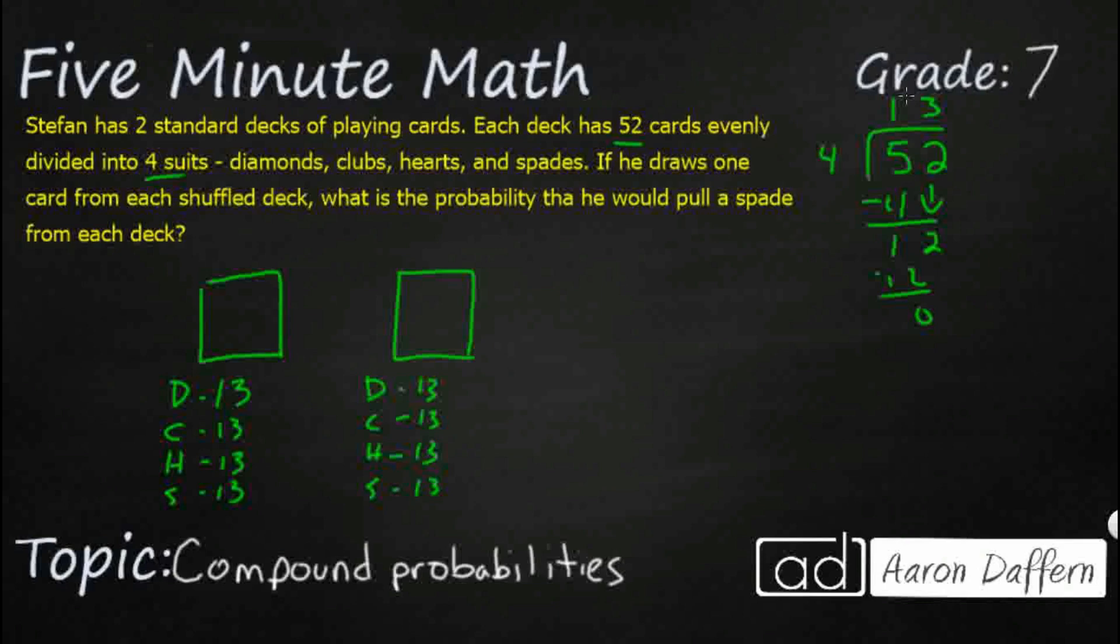So, he's going to draw one card from each shuffled deck. So, it's a compound event because we've got two simple events working, one for each deck. And we don't have to worry about replacing cards because we're using two different decks. What is the probability that he will pull a spade from each deck?